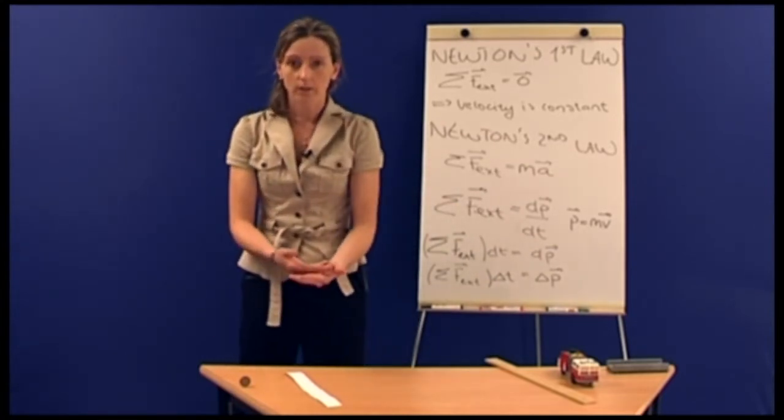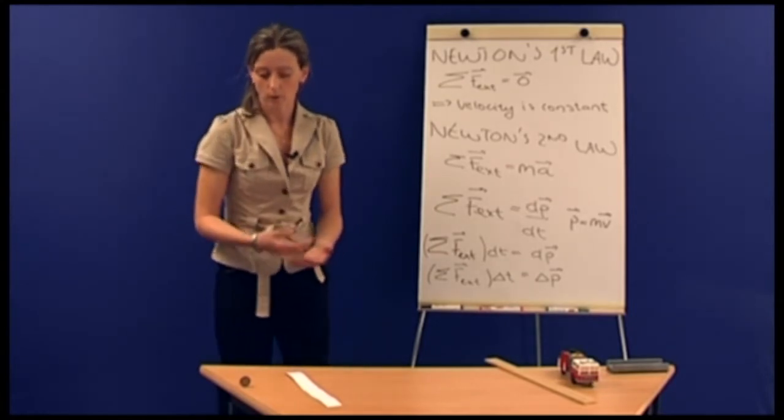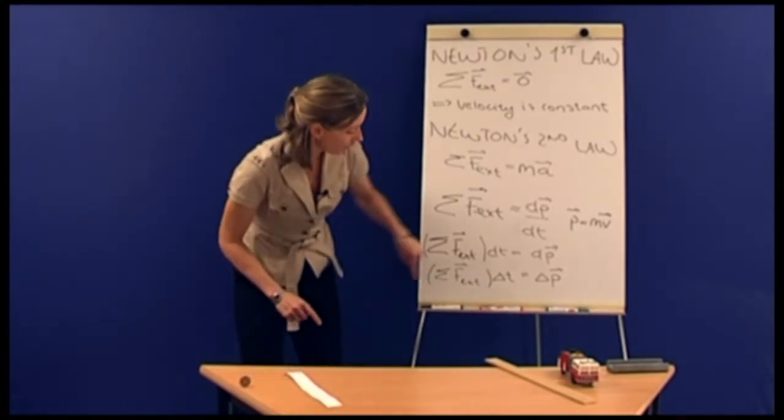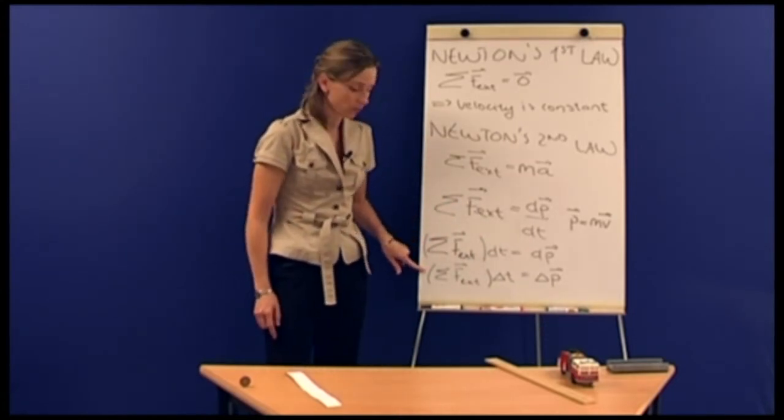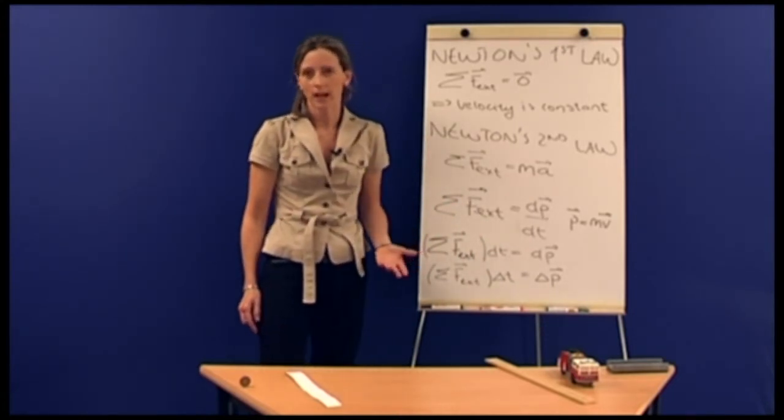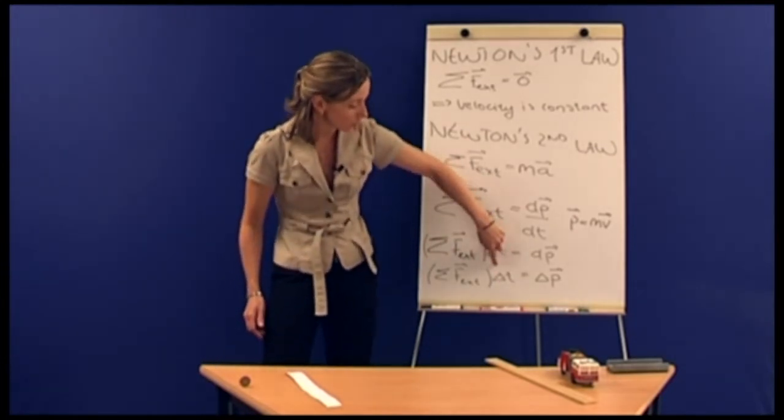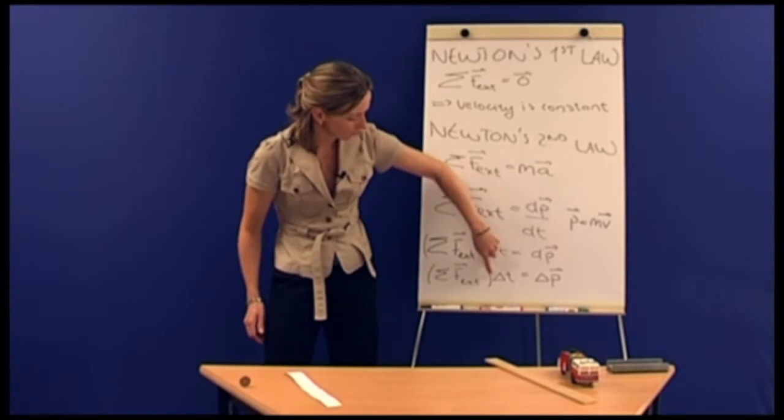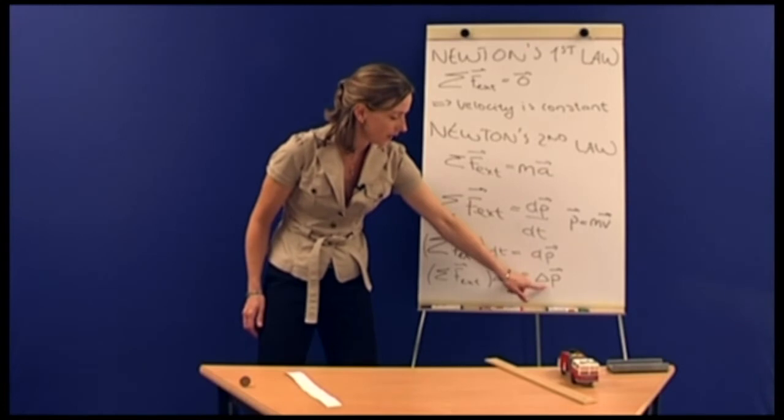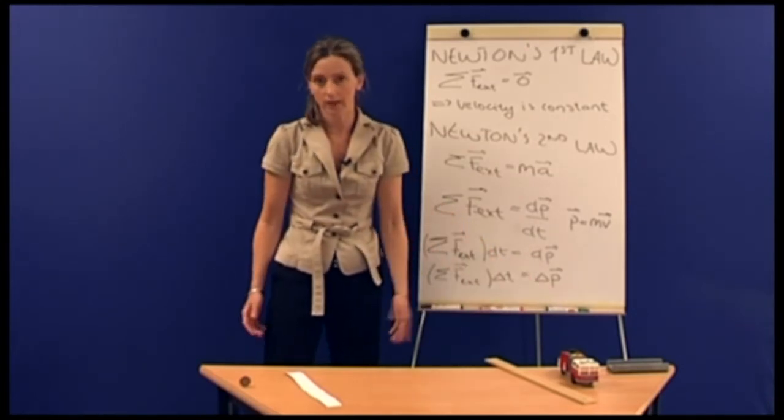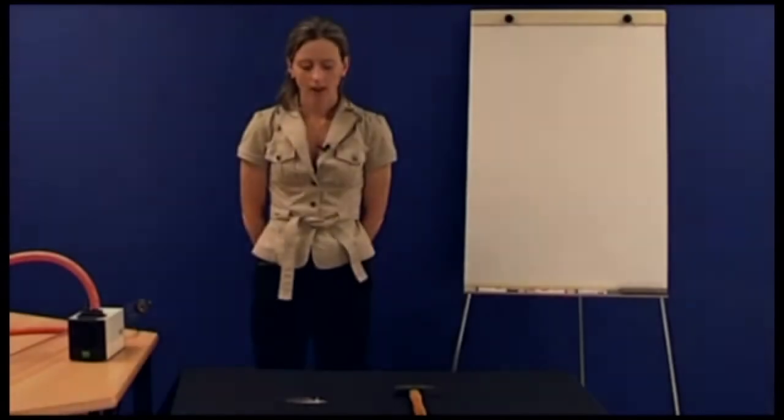Because obviously there was a large friction when I was pulling out the paper. So there was a friction between the coin and the piece of paper. So the sum of external forces here was not equal to zero. But what happened was that I was hitting so fast on the paper that the delta t here was so short that even though this was not zero, the whole thing here was very close to zero. So the delta p was equal to zero and the momentum was conserved.